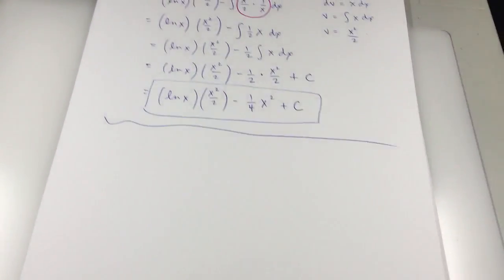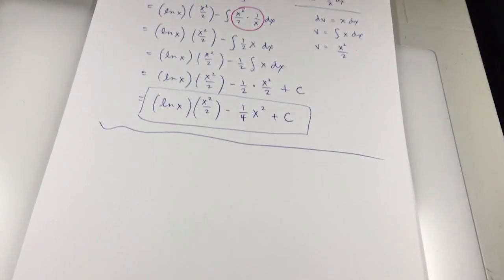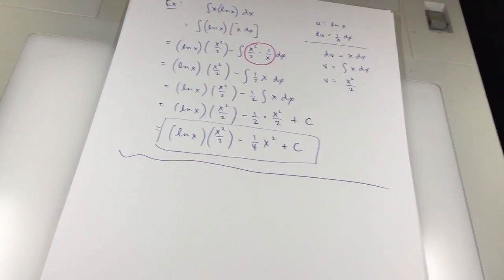Okay, one of the hardest things in these problems is for you to figure out what's going to be U and what's going to be DV.